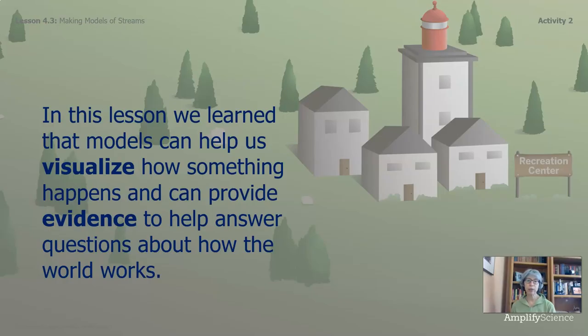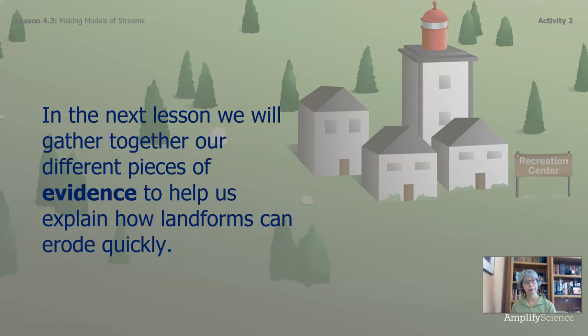Okay. In this lesson, we learned that models can help us visualize how something happens and can provide evidence to help answer questions about how the real world works. In the next lesson, we will gather together our different pieces of evidence to help us explain how landforms can erode quickly. Well, I will see you for part three of this lesson. Bye for now.